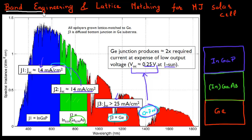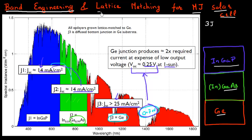In the last video, I was talking about band engineering for making multi-junction solar cells. I was particularly looking at the case of a solar cell which had three junctions. Fortuitously, we came across a material system which gives us three semiconductors — germanium, gallium arsenide, and indium gallium phosphide — which are lattice matched to each other, so I can grow them on top of each other without creating defects and make solar cells. This solar cell gives efficiencies of approximately 40% at a concentration of 500 suns.